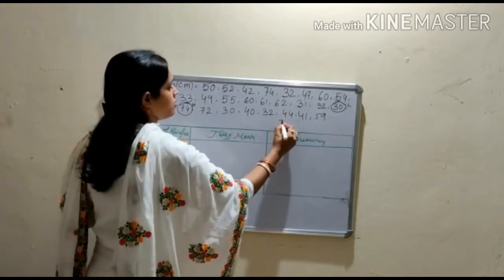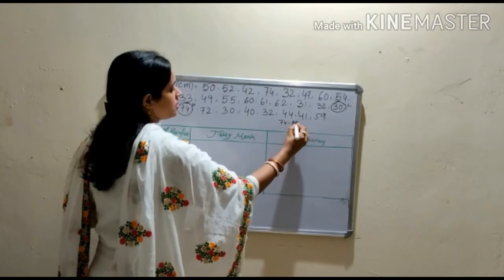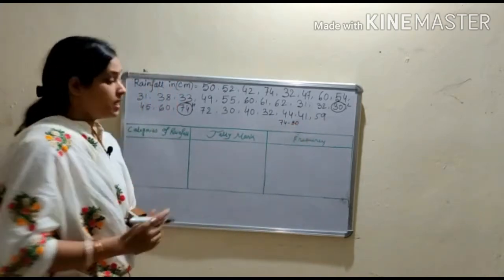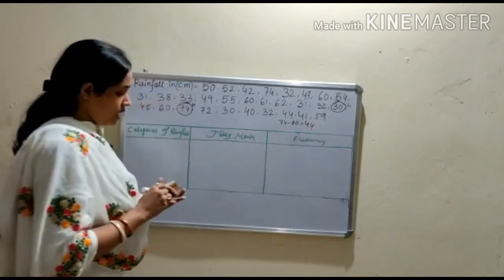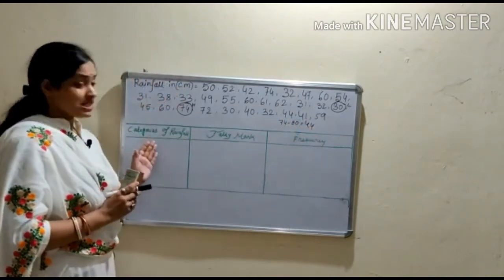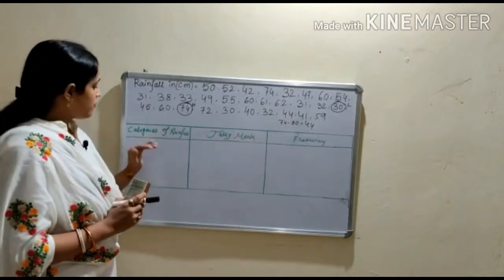So 74 minus 30, okay we found 44. Now here in this section, that means in frequency distribution table, first we found class interval.